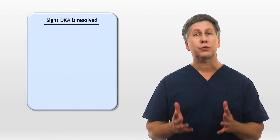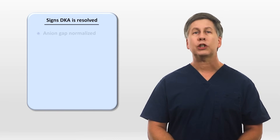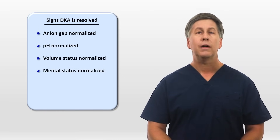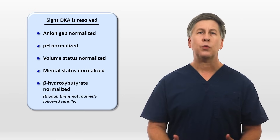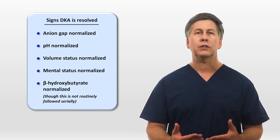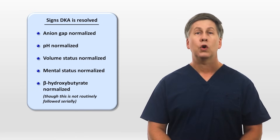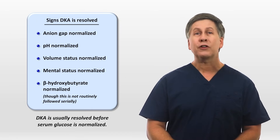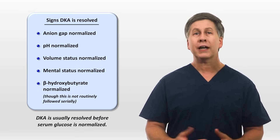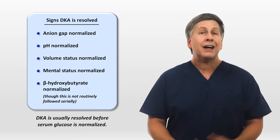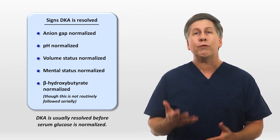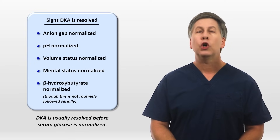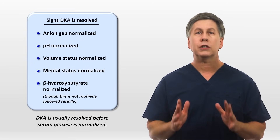What are some signs that DKA is resolved? You'll see normalization of the anion gap, the pH, the patient's volume status and mental status, and the beta-hydroxybutyrate, though this last one is not routinely followed serially. What's not on this list? Glucose. DKA is usually resolved before the serum glucose is normalized, and rapid normalization of glucose may not even be desirable, as it could risk overshooting into hypoglycemia, and a rapid decrease in serum osmolarity could theoretically cause cerebral edema.